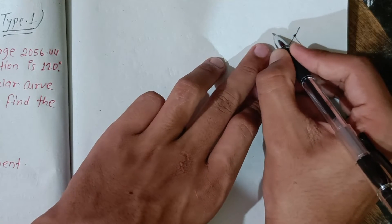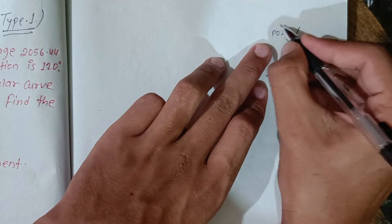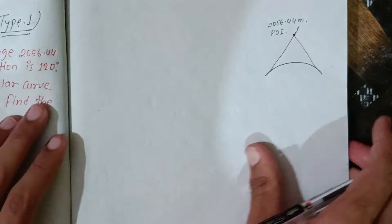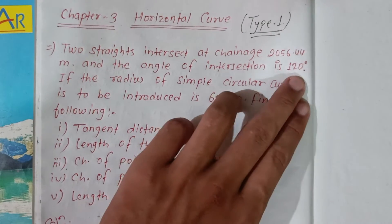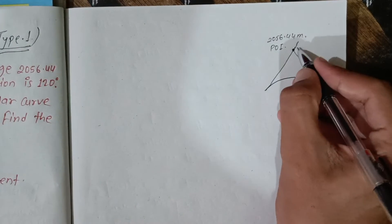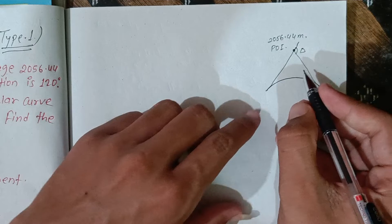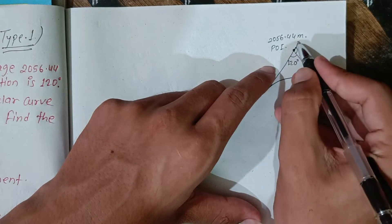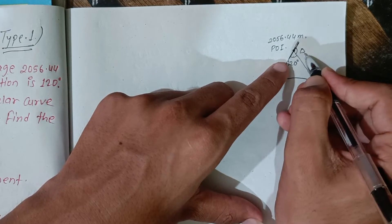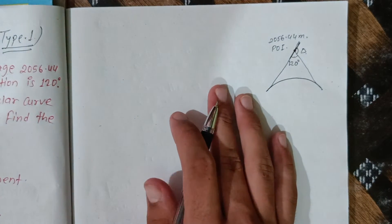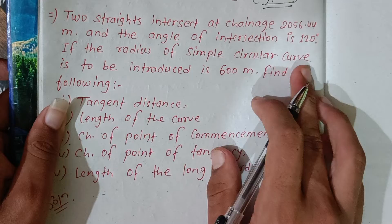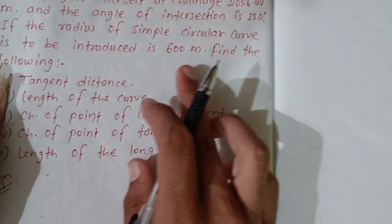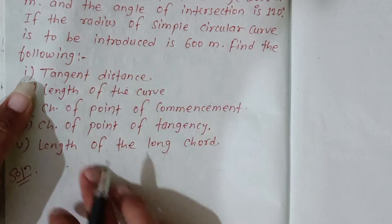The point of intersection chainage is 2056.44 meters. The angle of intersection is 120 degrees. When I say angle of intersection, the deflection angle delta — I want the difference. The radius of the simple circular curve to be introduced is 600 meters. Find the following.